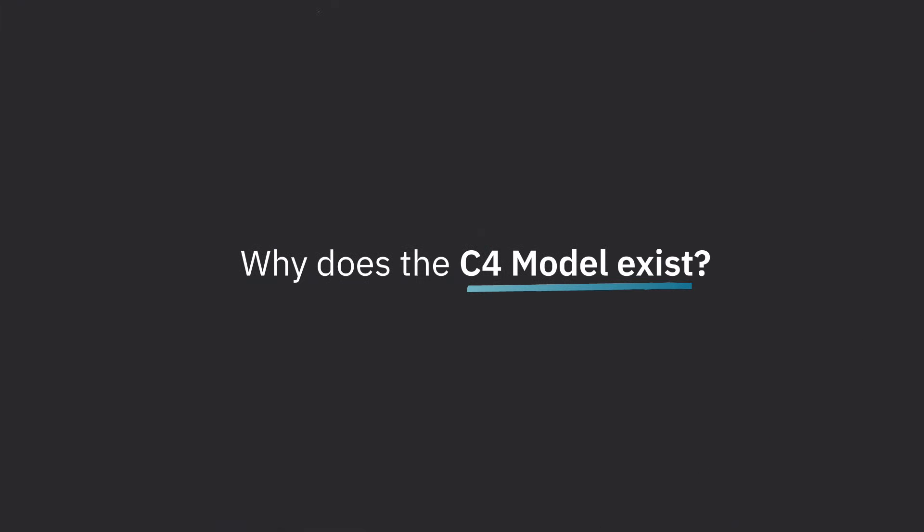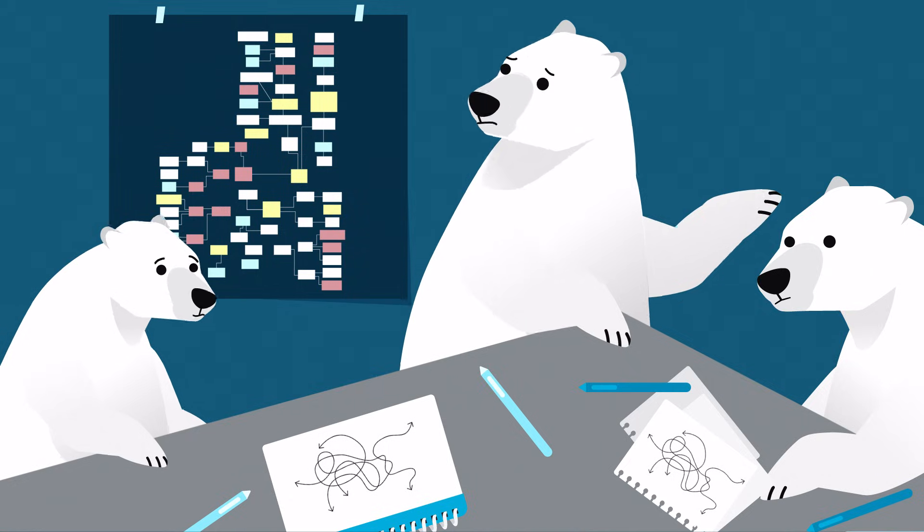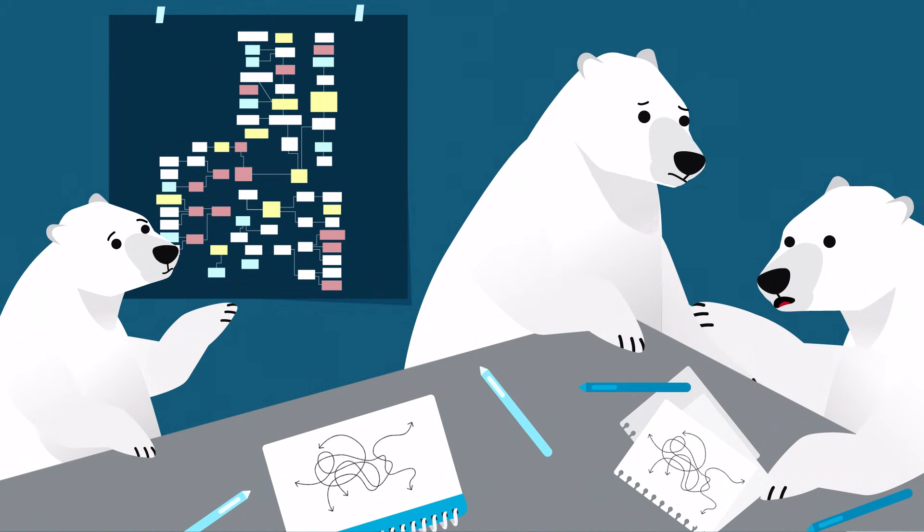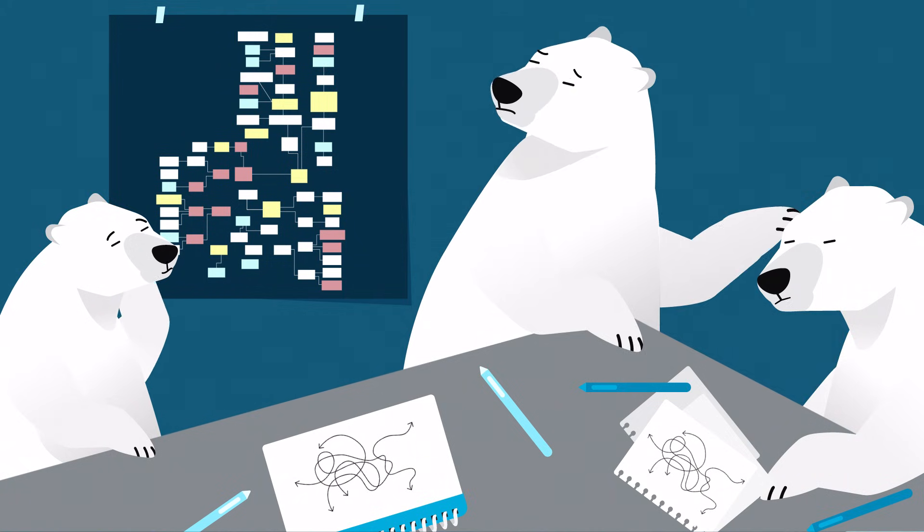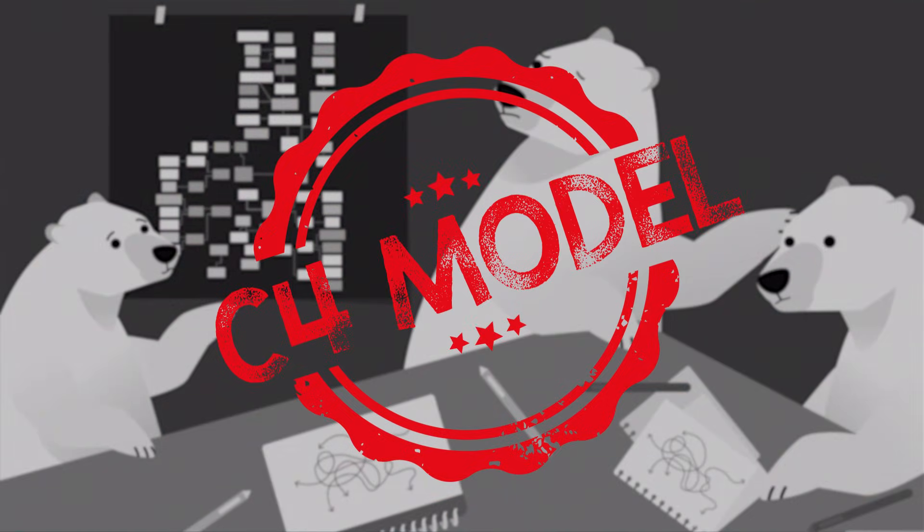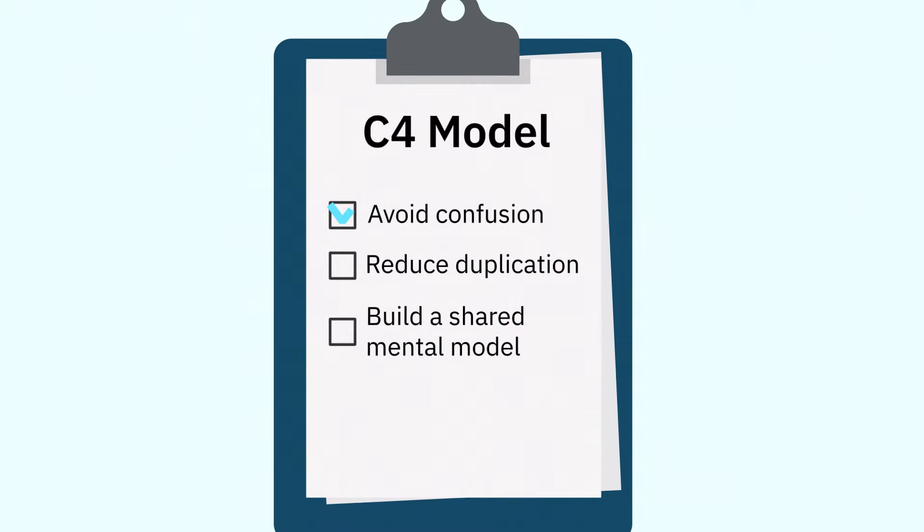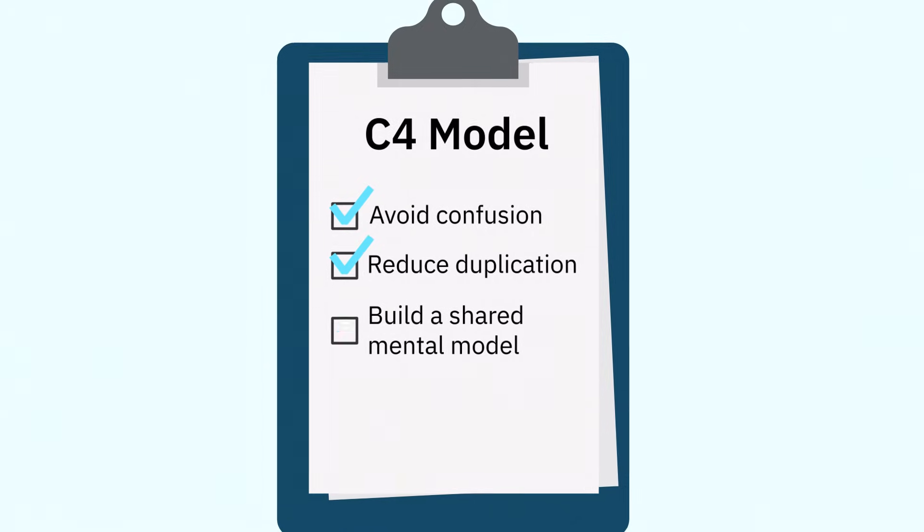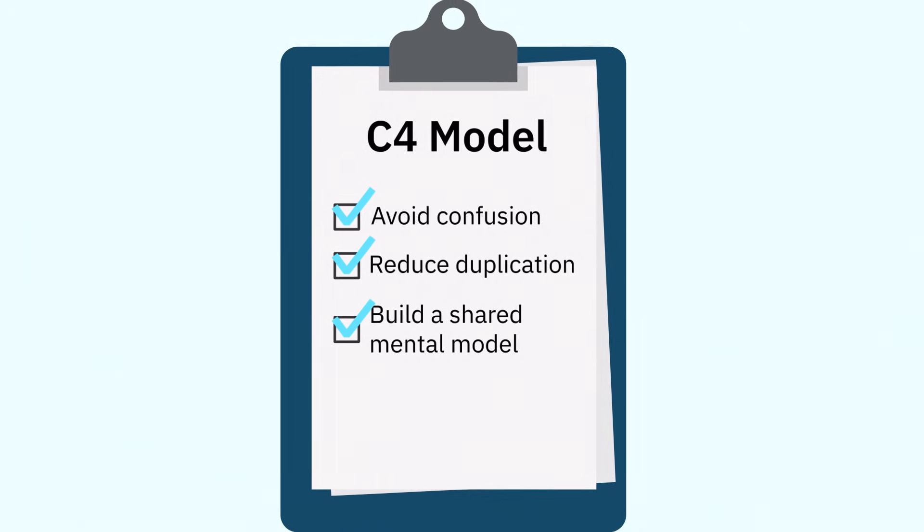Why does the C4 model exist? Most teams are either too vague or too detailed. Worse, a lot of teams mix abstractions, which isn't fit for purpose with any audience. The C4 model gives you just enough structure to show the big picture and the inner workings. It helps teams avoid confusion, reduce duplication, and build a shared mental model of the system.